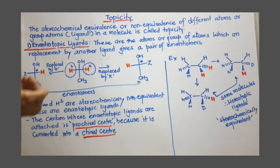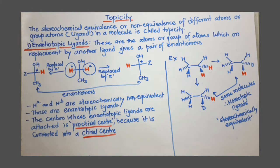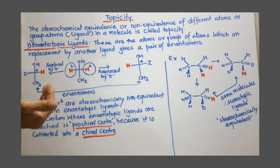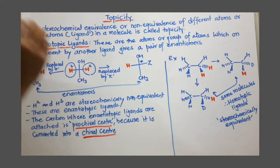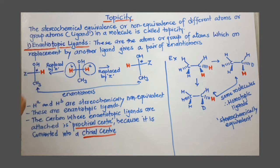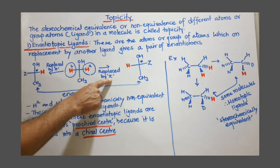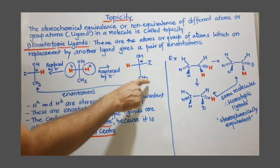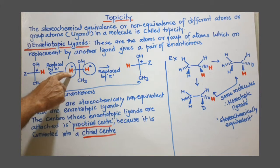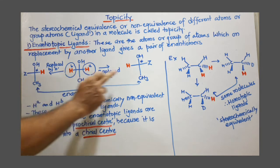But if I ask whether these two protons are stereochemically equivalent or not, then there is a problem. To decide whether two protons are stereochemically equivalent or not, you have to replace each proton one by one with another atom or group of atoms — say that atom is Z. So if I replace H-A with Z I will get this structure, and if I replace H-B with Z I will get this structure.